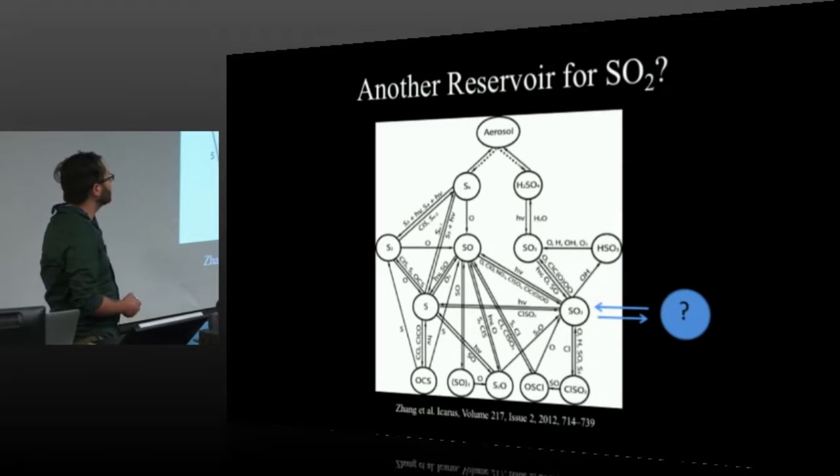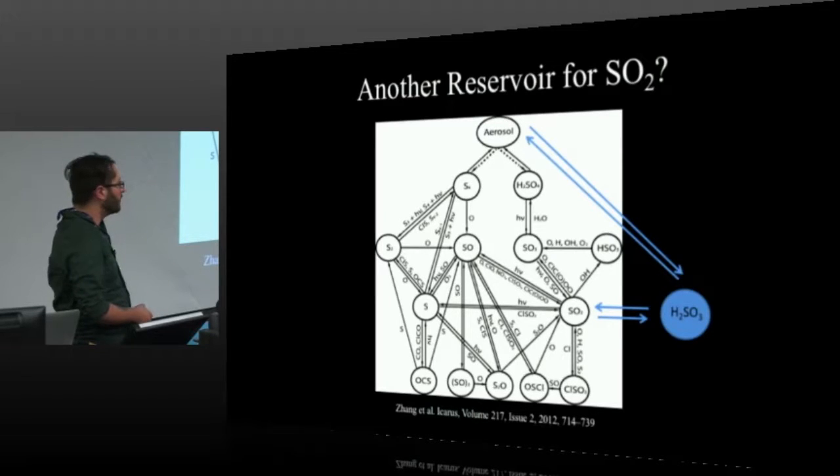So this has led us to ask the question of, if we look at the entire system of SO2, is there something else? Is there another reservoir, or some other molecule that could be photolyzing and leading to SO2 in the atmosphere? And so one thing that we started to look at is sulfurous acid, H2SO3, rather than H2SO4.